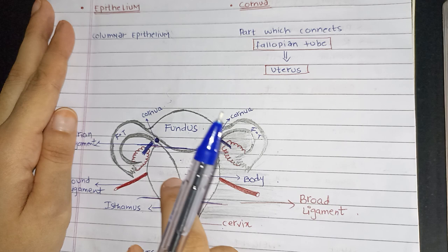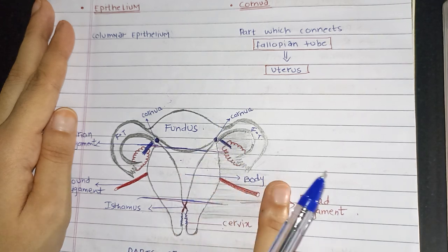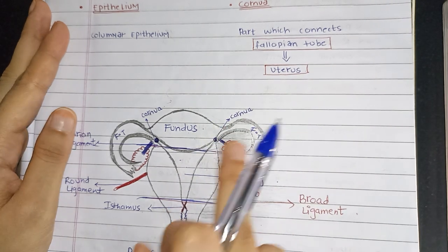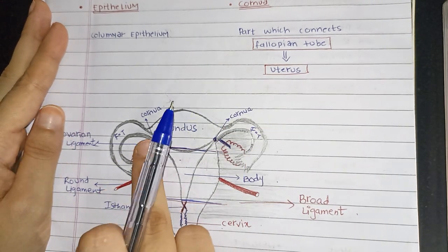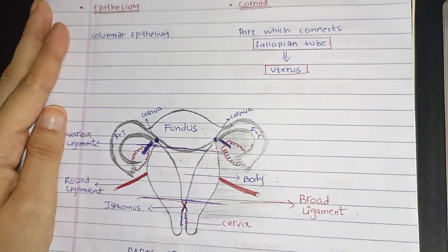The uterus is supported by the broad ligament, the round ligament, and the ovarian ligament.